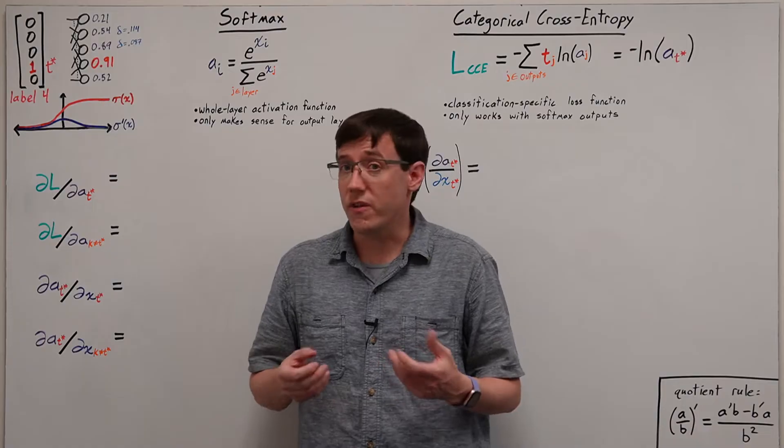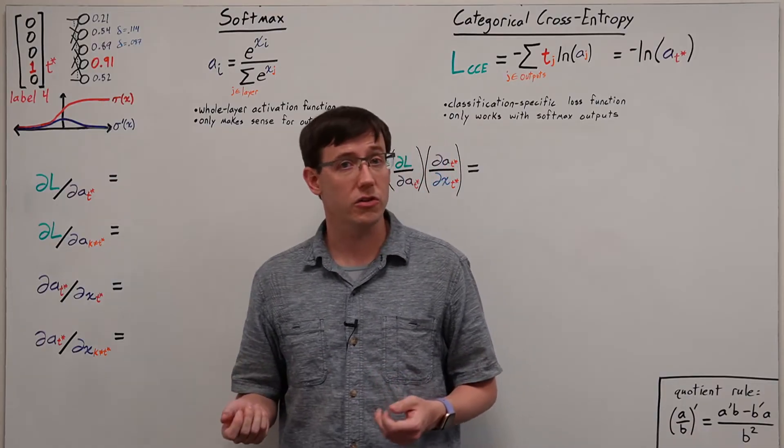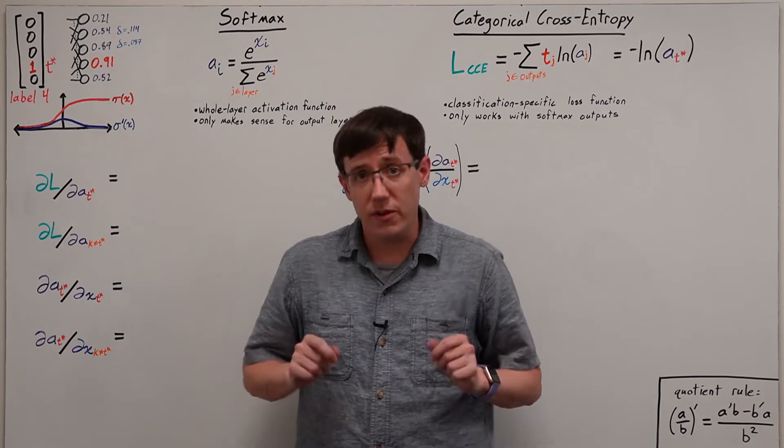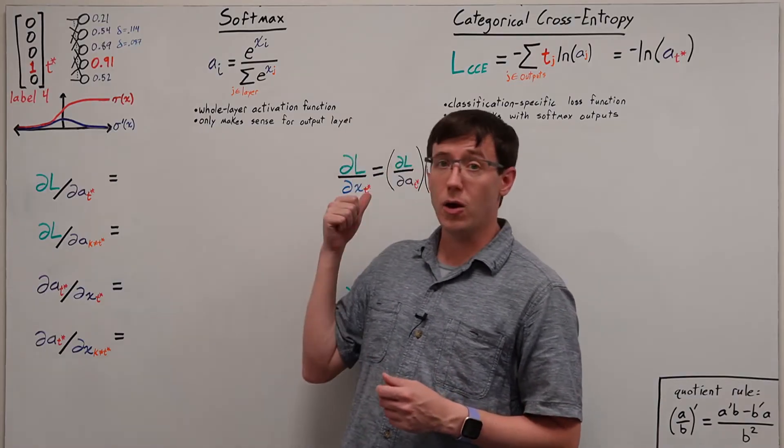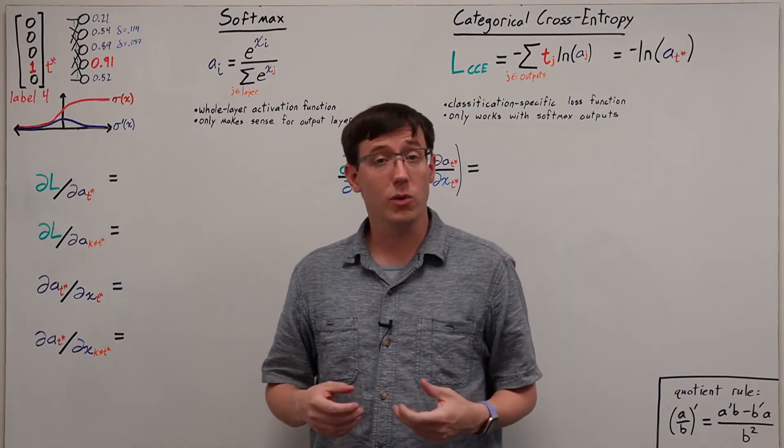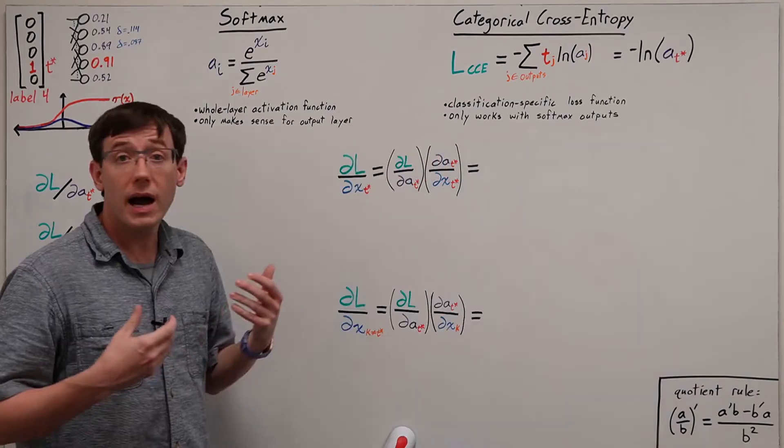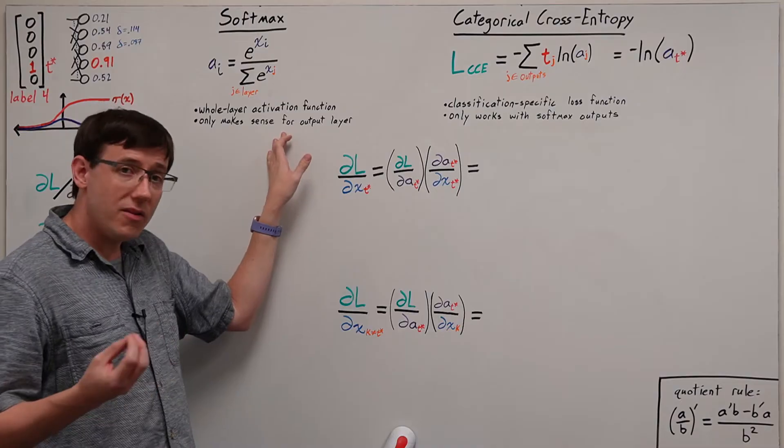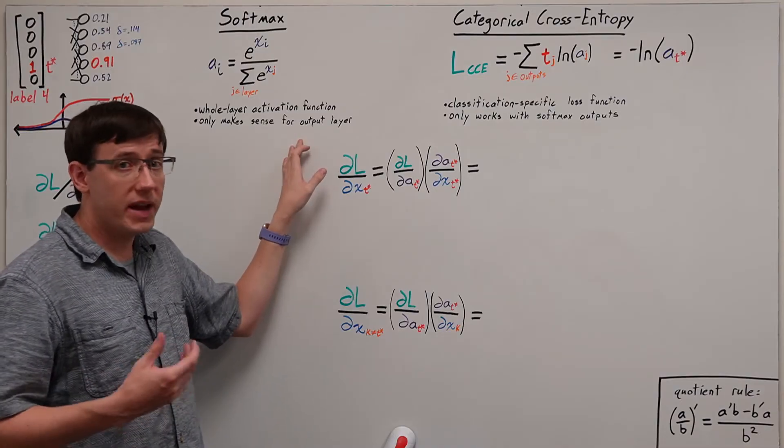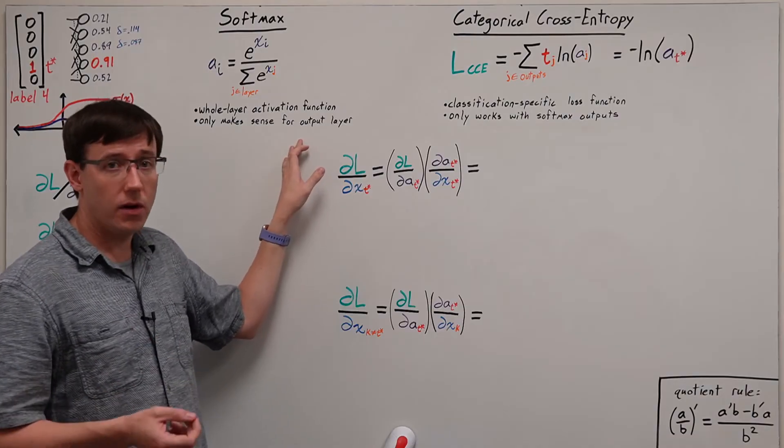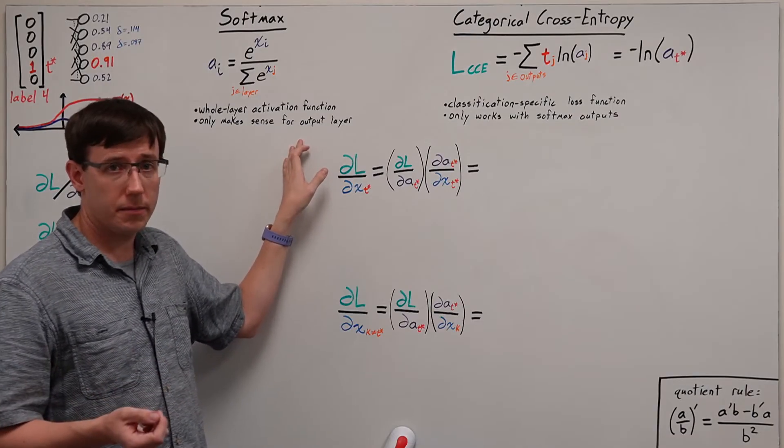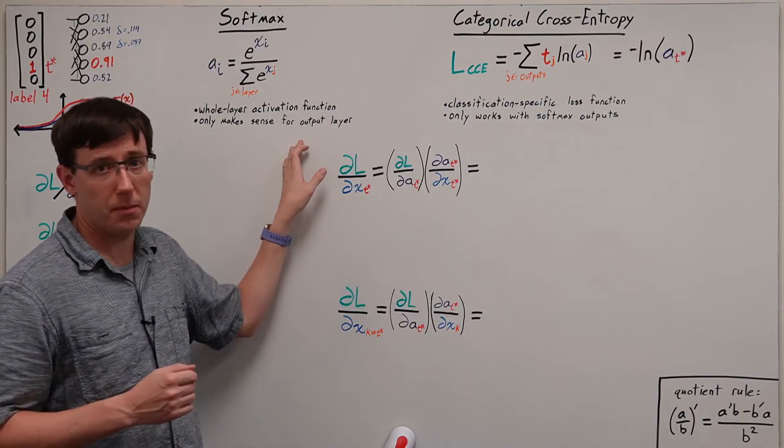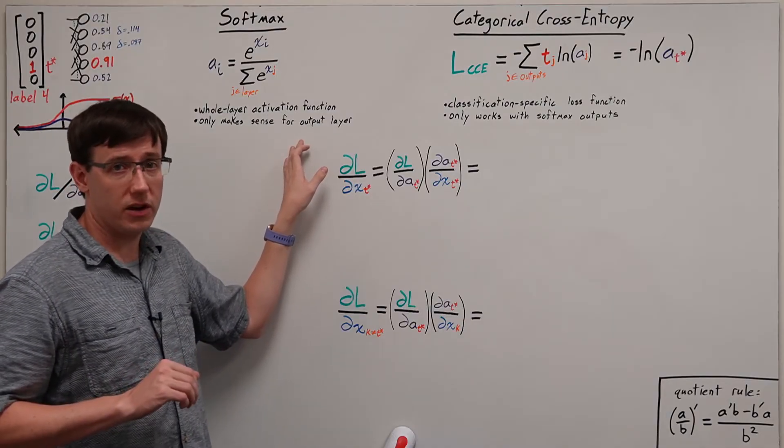A similar issue known as the vanishing gradient problem also comes up when we use sigmoid activations for hidden neurons. And we'll talk much more about vanishing gradients in a future video. In this video, I want to demonstrate an alternative combination of output activations and loss function that will solve both of these problems with a sigmoid output layer. Our new activation is known as a softmax, and it gets its name from behaving a little bit like finding a maximum. Softmax activations are computed on an entire layer rather than individually for each neuron. And this activation function only makes sense as the output layer for a classification problem. We should avoid using softmax activations for hidden layers.